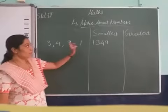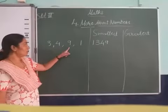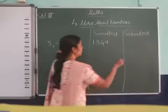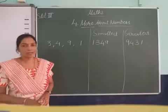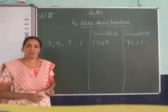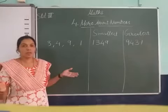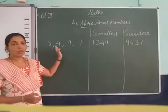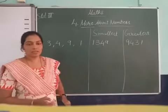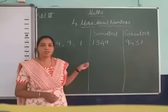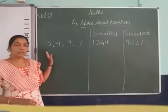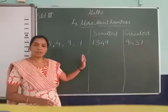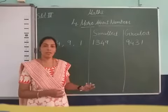Now opposite of this, we find out the greatest number. Out of these digits, 9 is the greatest, then 4, then 3 and 1. So this way we find the greatest number and the smallest number — whether they give you a set of numbers or a set of digits to form the smallest and greatest. Keep in mind the rules: while comparing, we start from the left side.